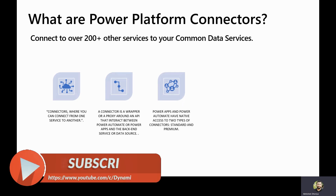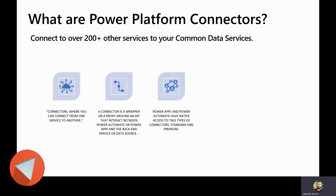There are two types of Power Platform connectors: standard and premium. Standard Power Platform connectors are readily available for you to start using from the day you subscribe to a Power Platform instance, and you do not have to pay any additional licenses or additional cost to use those connectors. Premium connectors, however, may require some fees based on the connectors that have been built for you to use.